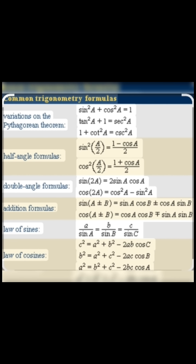sin 2a is equal to 2 sin a cos a. cos 2a is equal to cos² a − sin² a. sin(a ± b) is equal to sin a cos b ± cos a sin b. cos(a ± b) is equal to cos a cos b ∓ sin a sin b.